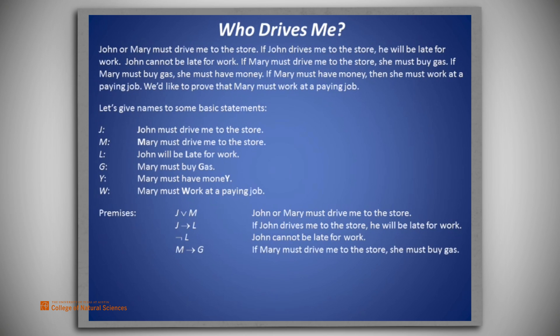M implies G, which is if Mary must drive me to the store, she must buy gas. G implies Y, if Mary must buy gas, she must have money. And finally, Y implies W, which is if Mary must have money, then she must work at a paying job. The conclusion to be drawn is W, which is Mary must work at a paying job.